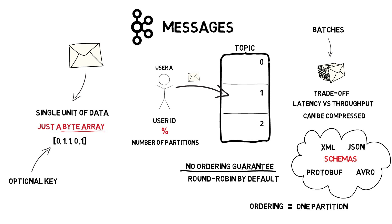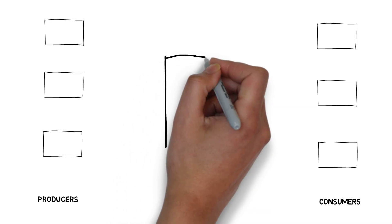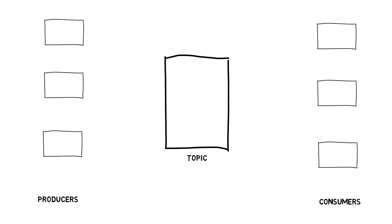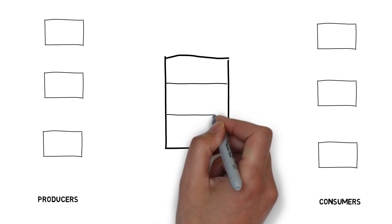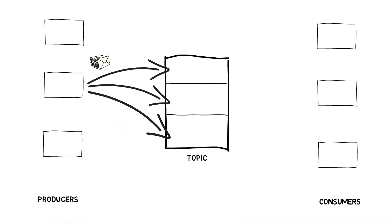Each partition can be hosted on a different server, which means that a single topic can be scaled horizontally across multiple servers to improve throughput. Producers create new messages and send them to a specific topic. If a partition is not specified and a topic has multiple partitions, messages are written into multiple partitions evenly. This can be further controlled by having a consistent message key, as described earlier.